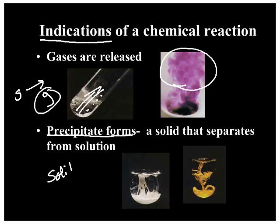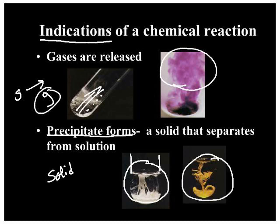The last indicator is that a precipitate forms. A precipitate is a solid substance that forms when two clear solutions are poured together. For example, a clear liquid mixed with another clear liquid can produce a white solid or a yellow solid. If you had no solid originally and you make a solid, it is clearly a new form of matter — and that fancy word for a solid forming is a precipitate.